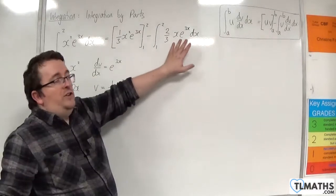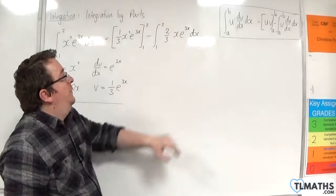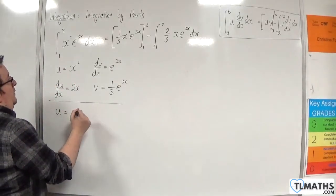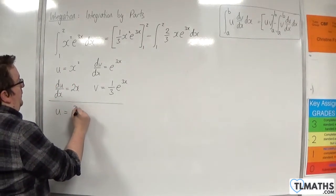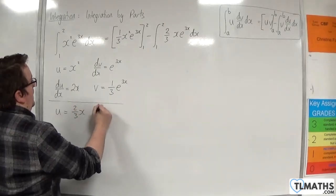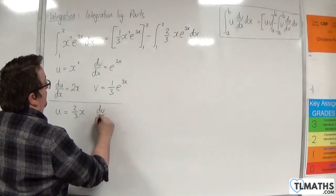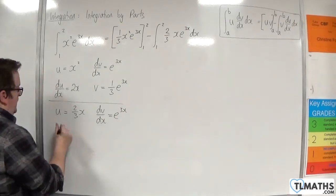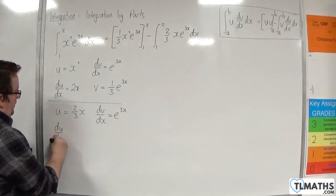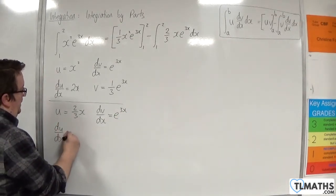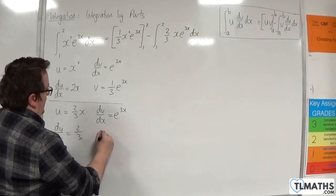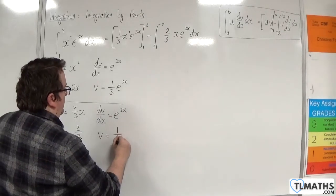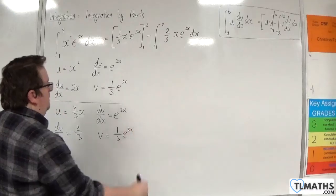Now this remaining integral requires integration by parts again. So u is going to be 2 thirds x, and dv by dx will be e to the 3x. So du by dx is 2 thirds, and v, the integral of e to the 3x, is 1 third e to the 3x.